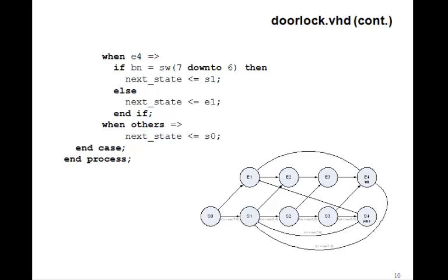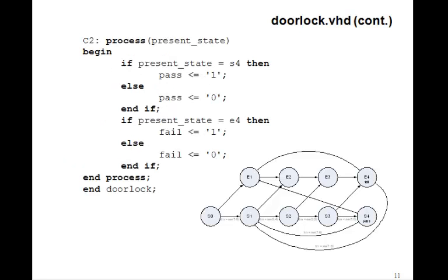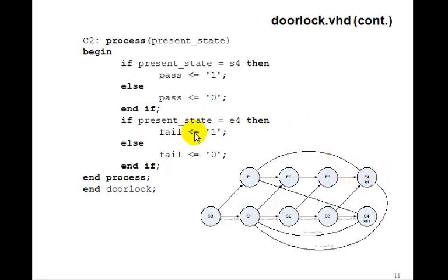That covers the C1 Moore machine state diagram. For output process C2, with present_state in the sensitivity list: if present_state is S4, pass equals one, else pass is zero. If present_state is E4, fail equals one, else fail is zero. That's the complete VHDL code for the door lock.